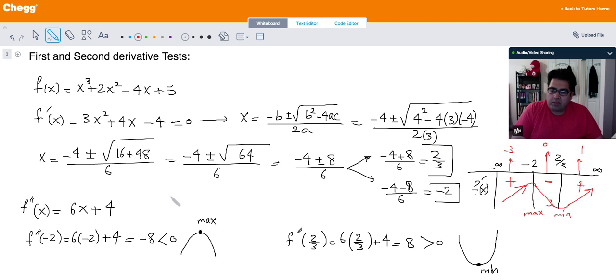And for the second derivative test, after you found the critical values using the first derivative, you can plug them back into the second derivative. As you see, I plug them back here. And based on the concavity, if it's concave down, it corresponds to a maximum, and if it's concave up, it corresponds to the minimum.